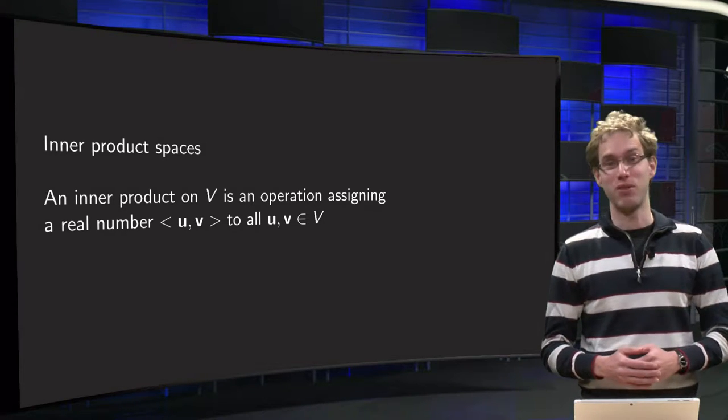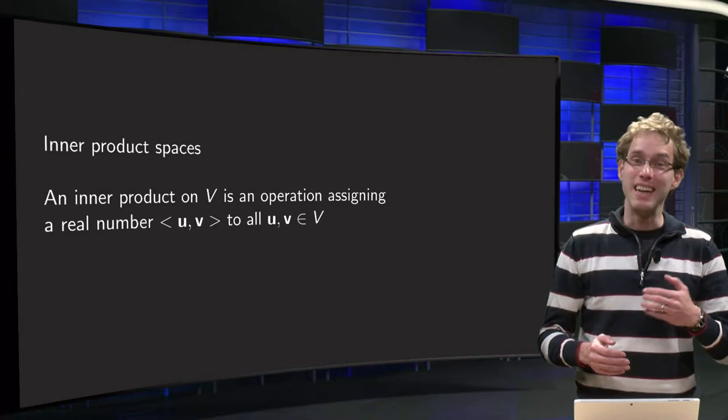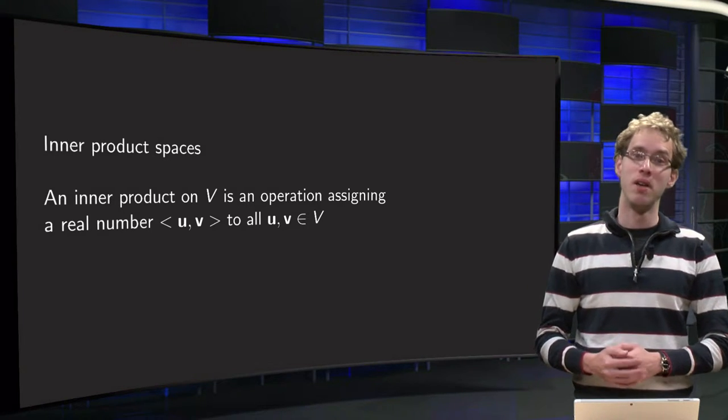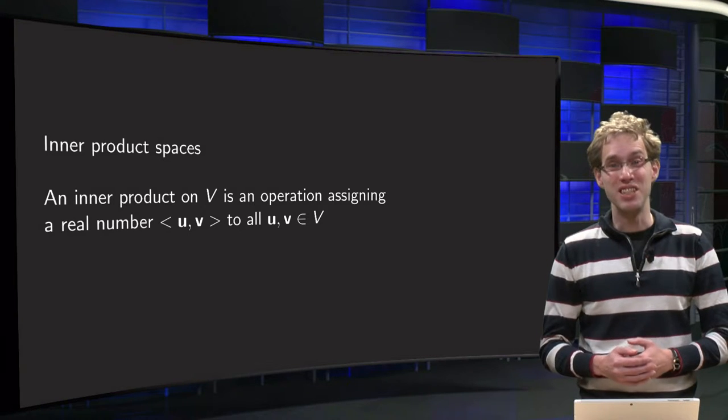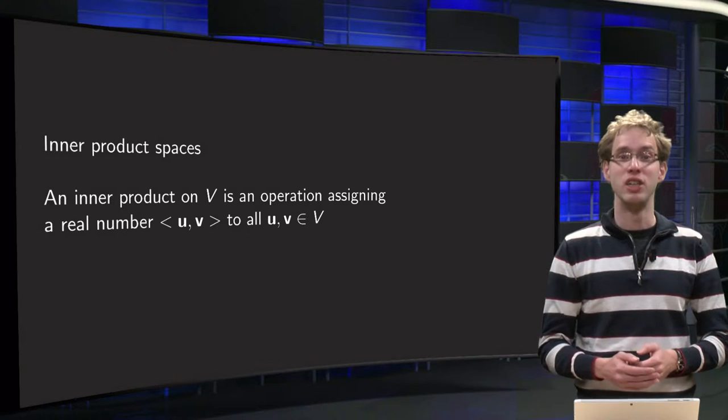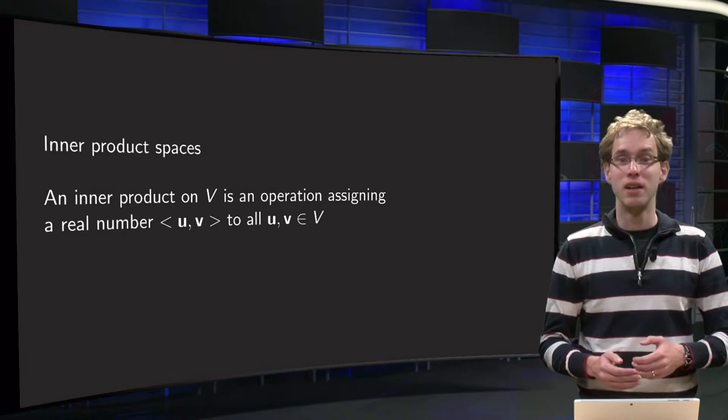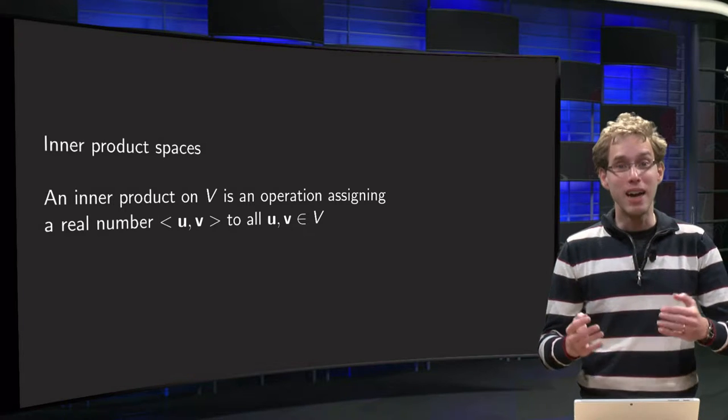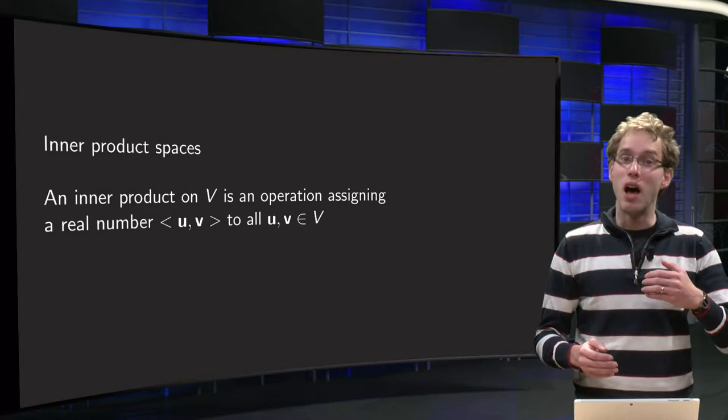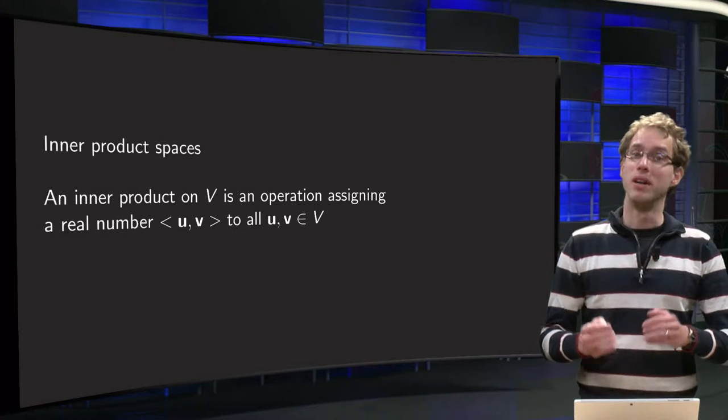Well, let us start with the second question. Suppose you want to approximate a nasty function f by an easier function, and you can choose either g or h. If you know how to compute distances between functions, you can compute the distance between f and g and between f and h, and you can judge which of the two will be the better approximation. And you can also compute your approximation error. And orthogonality is interesting because it will allow us to use similar projection formulas as we had for normal vectors. So that is the why question.